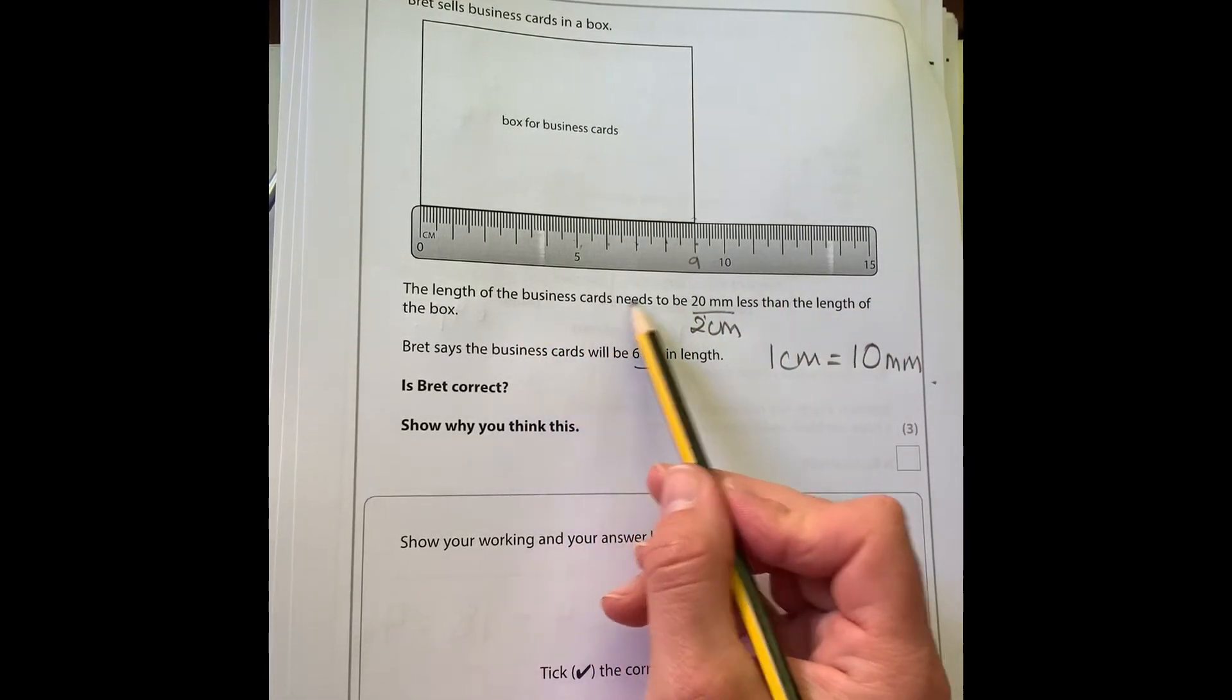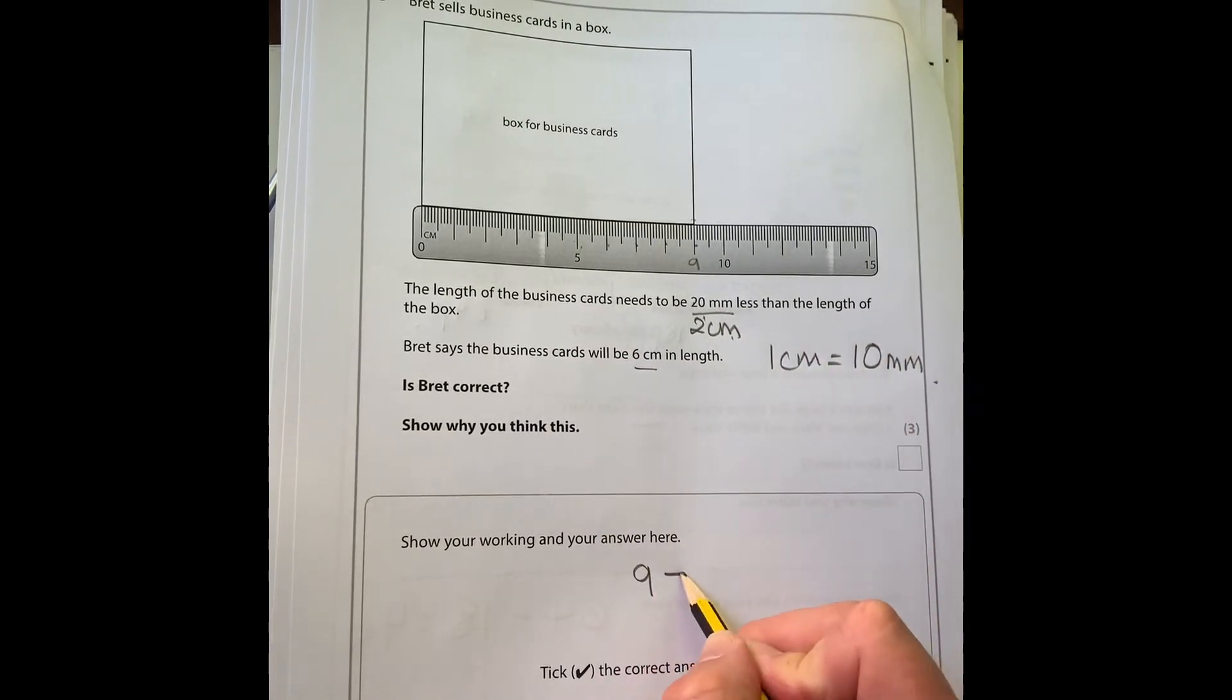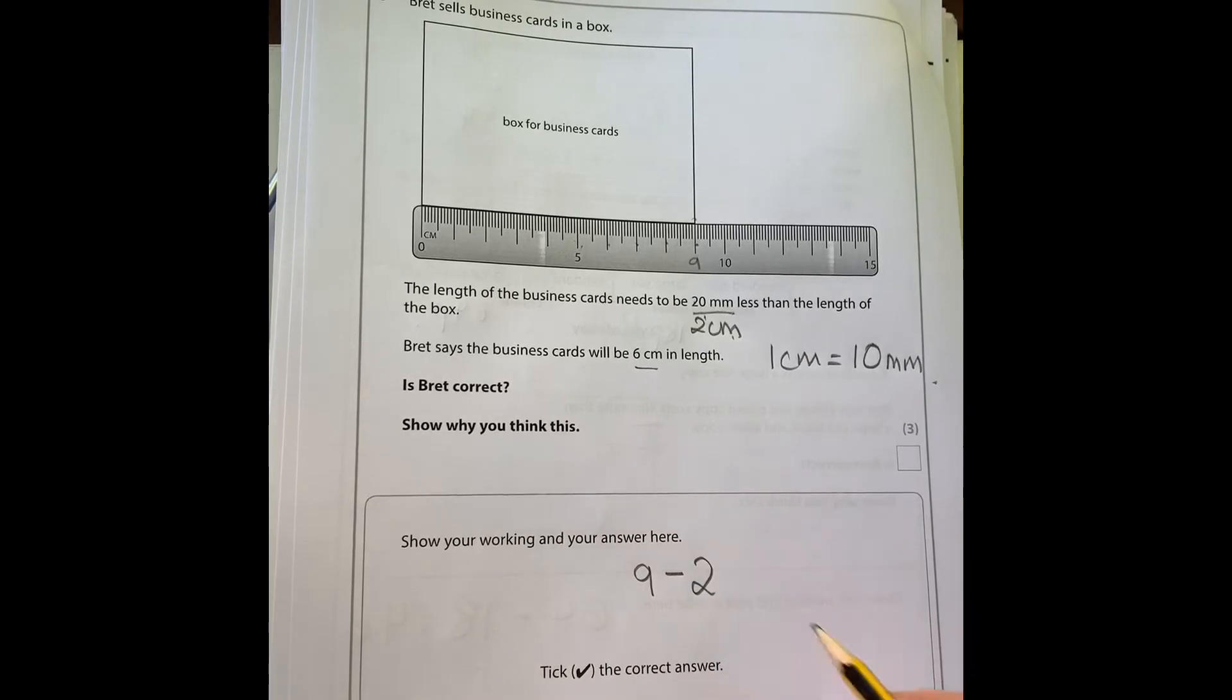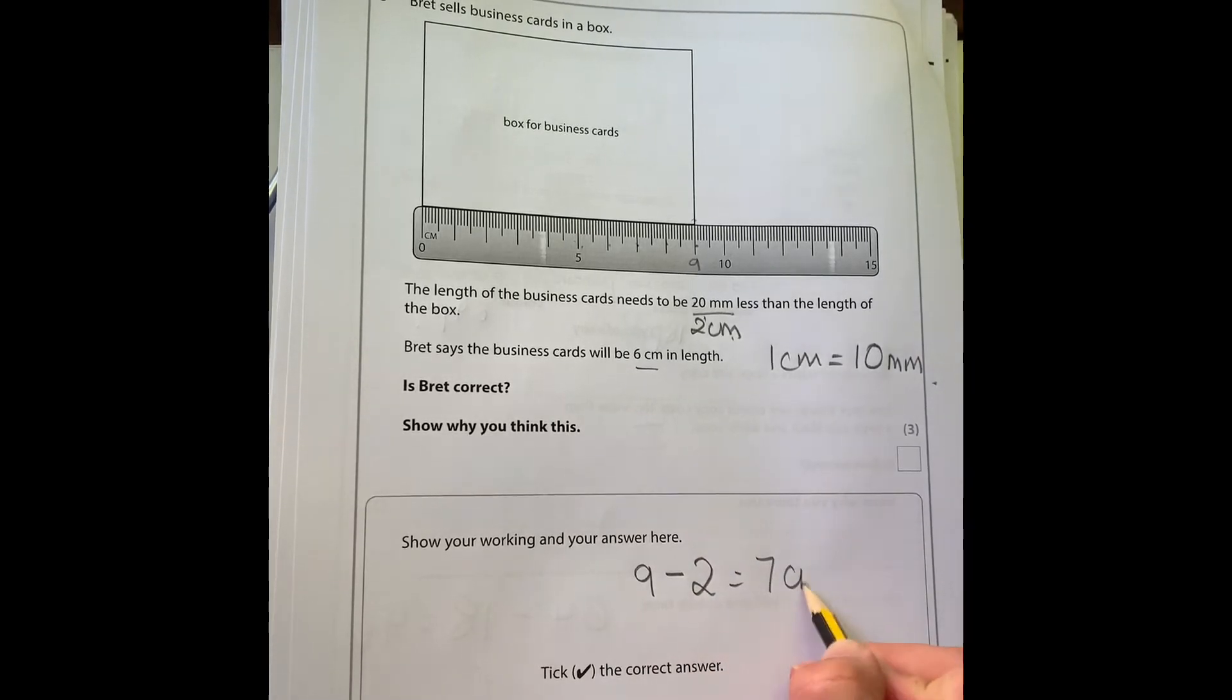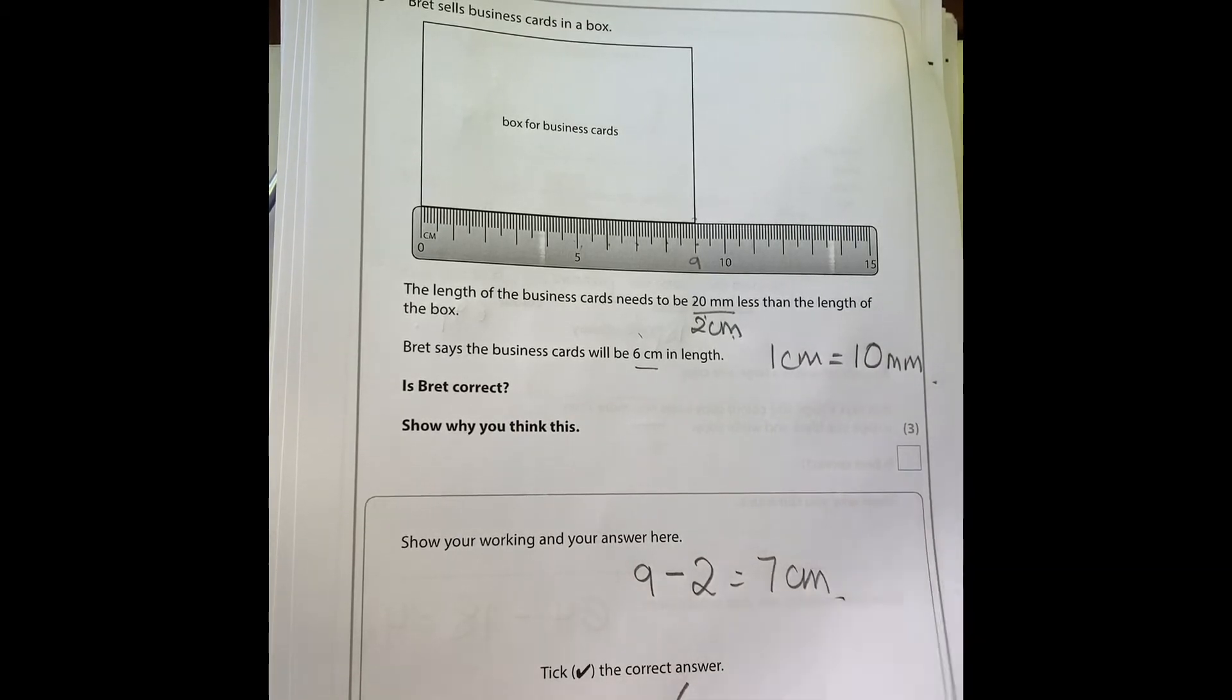The business cards need to be two centimeters less, so they would be nine take away two, which is seven centimeters. Brett said six, so actually he's wrong again. But make sure you show your working.